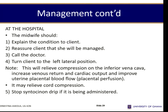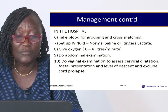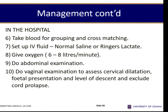At the hospital, perform all the same initial steps. If the woman is on an oxytocin drip, turn it off immediately because oxytocin causes hyper-contractions which diminish oxygen supply to the fetus, putting it into further compromise. Take blood for grouping and cross-matching in preparation for possible caesarean section. Set up IV fluid — normal saline or Ringer's lactate. In fetal distress, do not give dextrose. Administer oxygen.